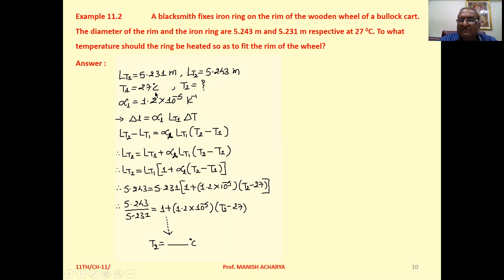Temperature T1, that is given to you as 27 degrees Celsius. Up to what temperature should the iron ring be heated? So temperature T2, that we have to find. Coefficient of linear expansion for iron, that is 1.2 × 10⁻⁵ Kelvin inverse.